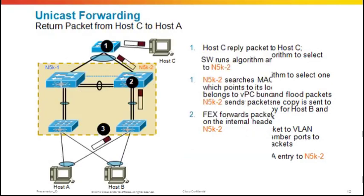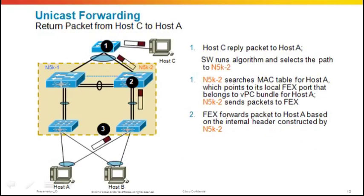For the return packet, Host C replies to Host A. The upstream switch also has a VPC to both 5Ks and treats them as one logical switch. It runs its algorithm and selects 5K2. 5K2 looks up Host A in its MAC address table, finds the entry pointing to its local FEX in the VPC bundle, and sends the packet to that FEX. The FEX forwards it to Host A based on the internal header constructed by 5K2, and Host A receives the packet.